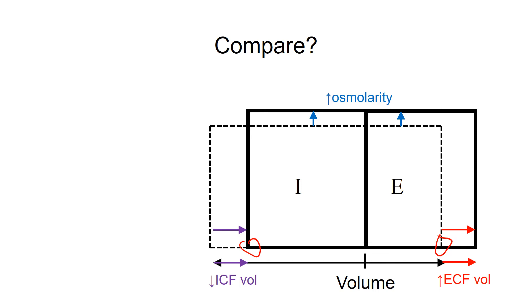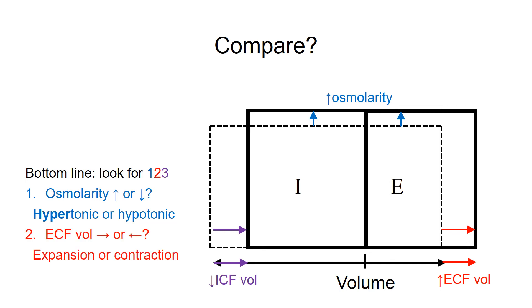The bottom line is this: first, look at osmolarity change—did it go up or down? Second, look at extracellular fluid volume—did it move right or left? Third, you can check the ICF volume change, which follows the osmolarity change in the opposite direction. For this example, since osmolarity increased it is a hypertonic change, and the extracellular fluid volume increased, so it is an expansion. Therefore, it is hypertonic expansion.